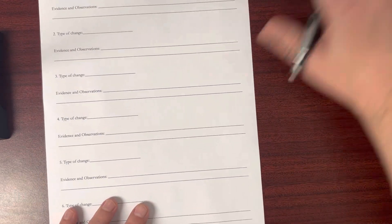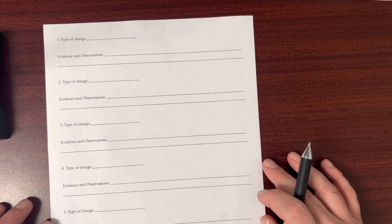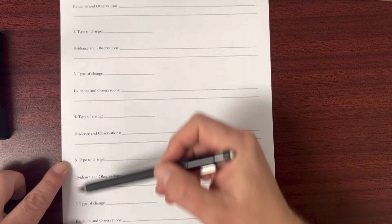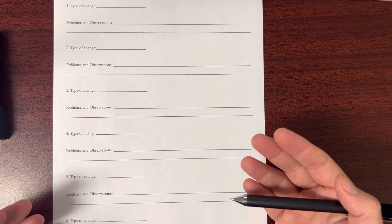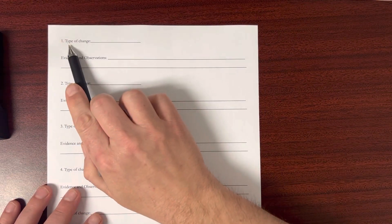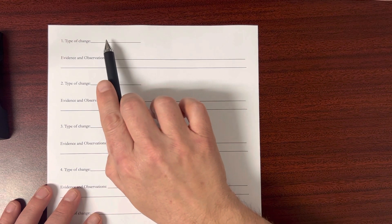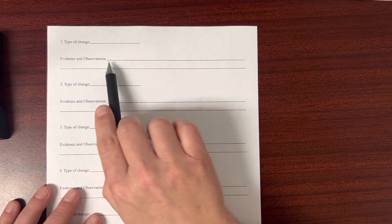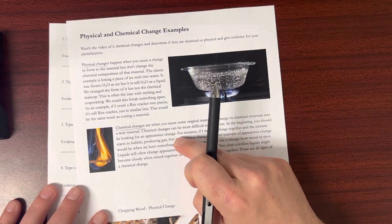So what you're going to do, you have to watch the video in order to do this worksheet. I'm going to go through six quick examples, six quick changes. You're going to tell me what type of change it was. Was it physical or was it chemical? And then what are your observations or evidence that tell you that? And I would definitely look here to give you help with that.